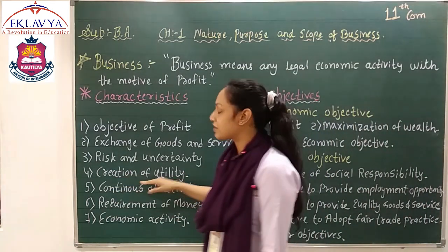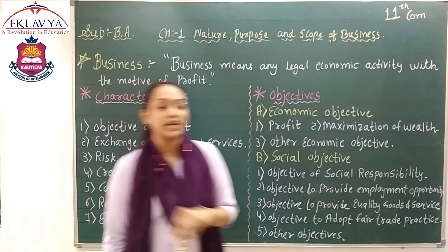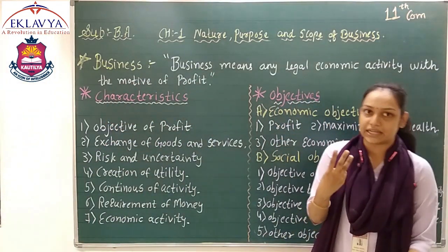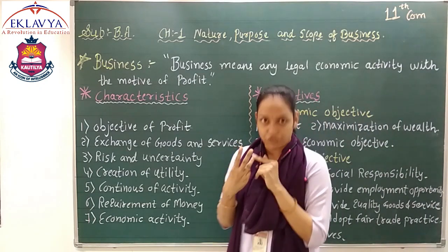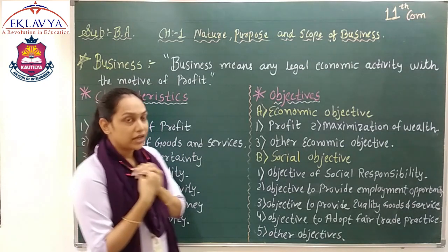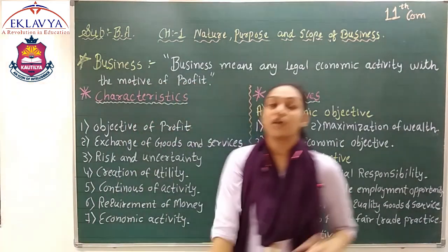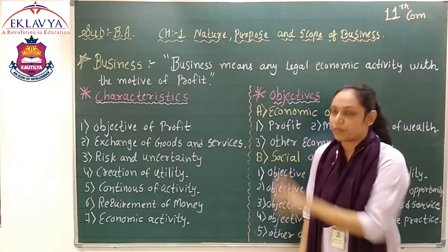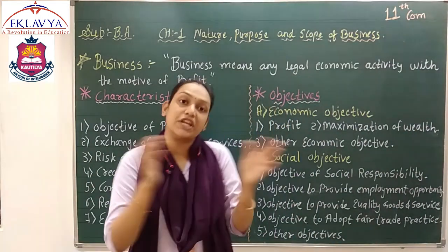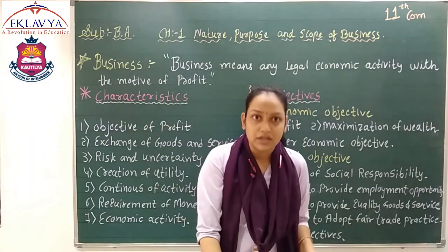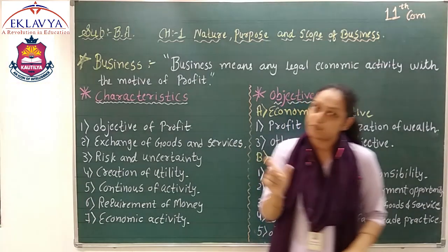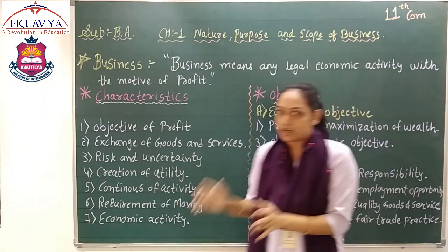The fourth characteristic is the creation of utility. In creation of utility, there are three points: we create three types of utility — first is form, second is time, and third is place. The first is creation of form: when you convert raw material into a finished good, that is called creation of form. Once your product is made and ready, it needs to reach the market.